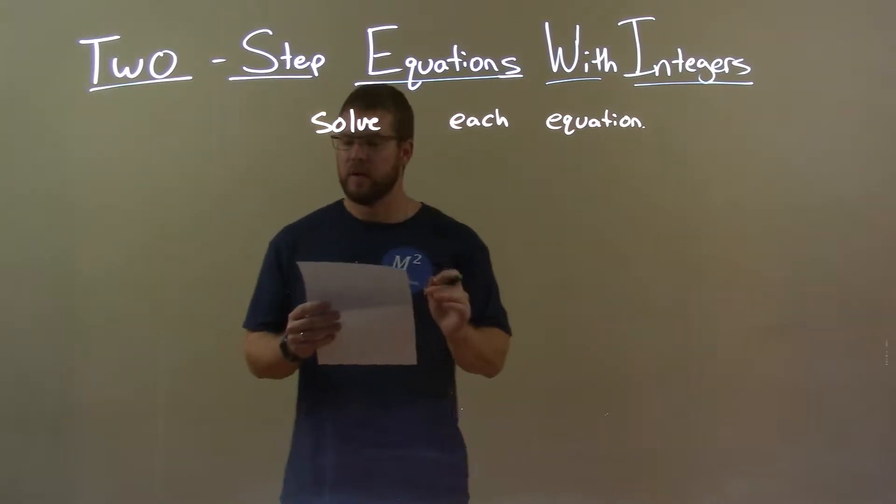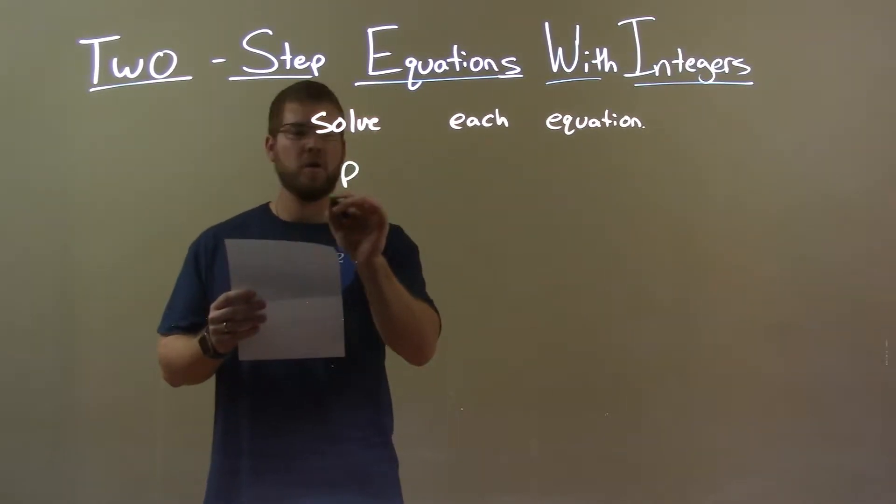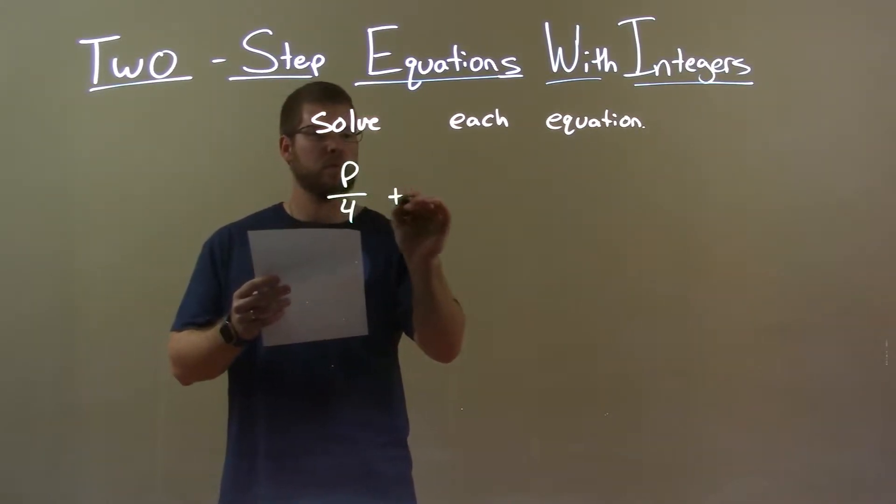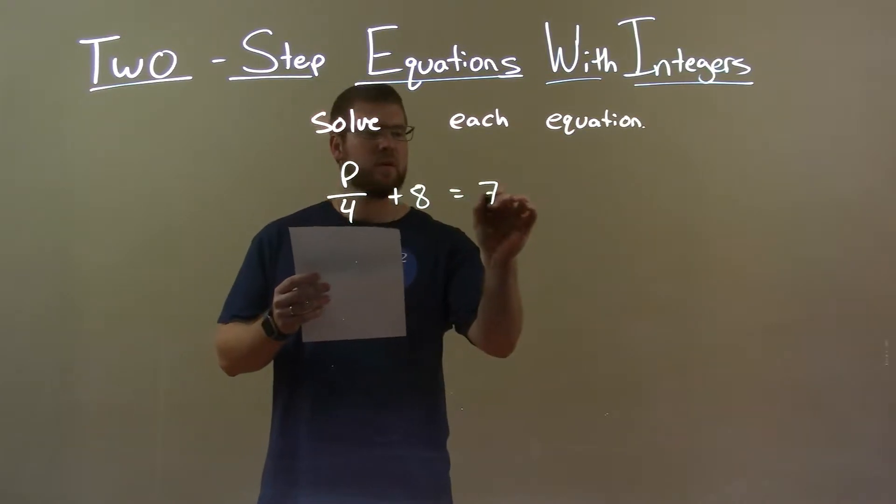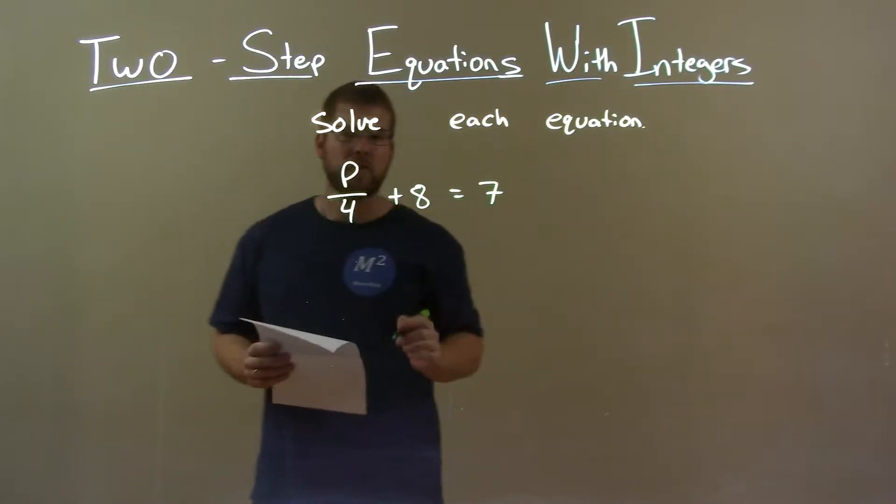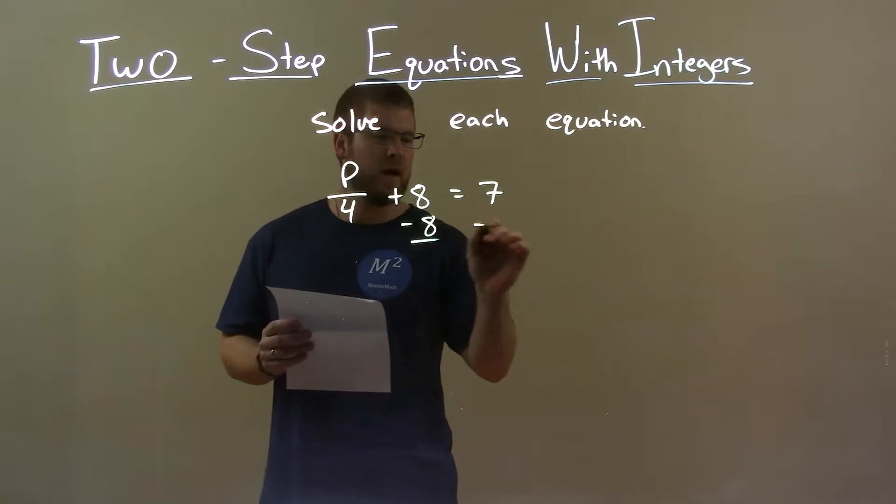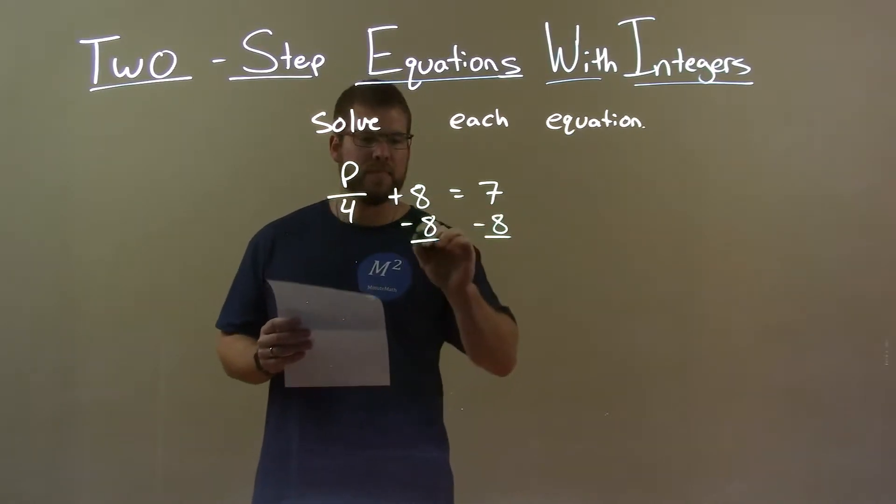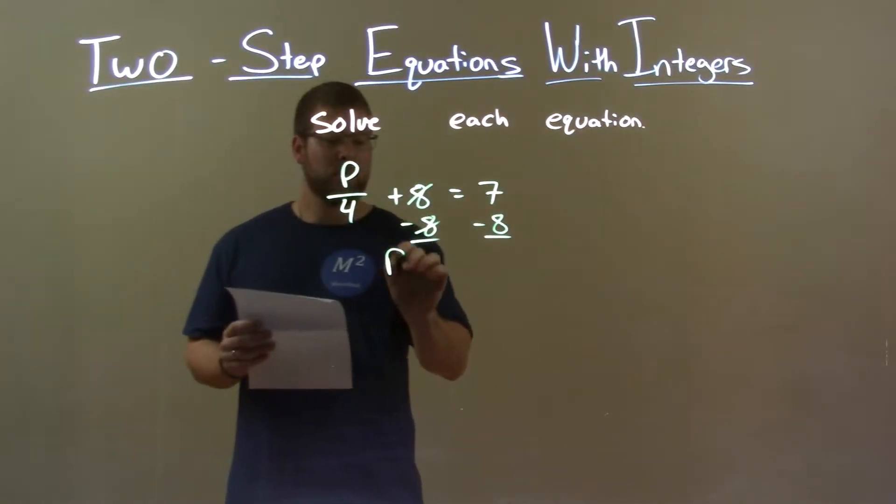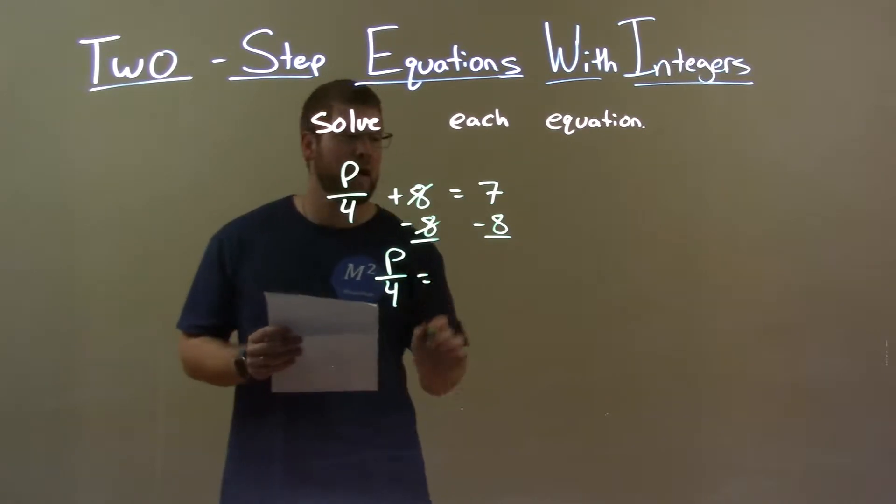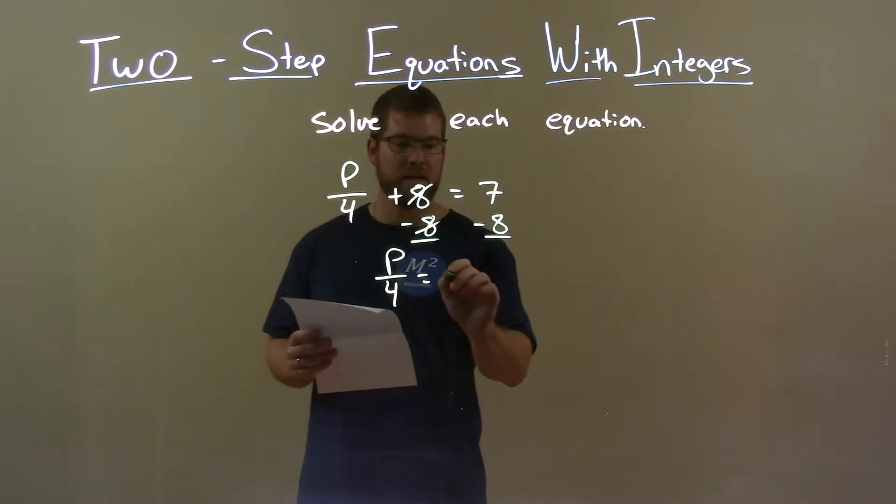If I was given this equation p over 4 plus 8 equals 7. First thing I want to do is subtract 8 to both sides because that's the opposite of the addition. 8's cancel, leaving me with p over 4 by itself on the left. Now 7 minus 8 is a negative 1.